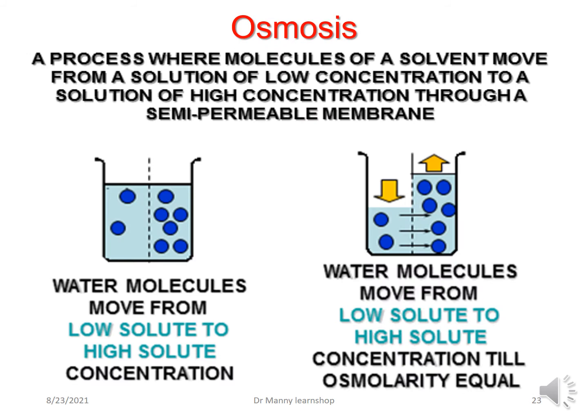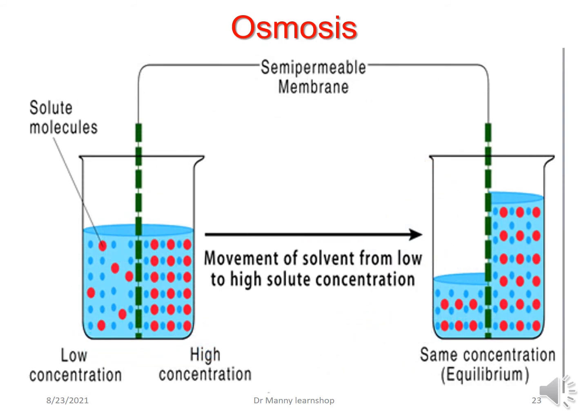Osmosis is another mechanism. It's a process where molecules of a solvent move from a solution of low concentration to a solution of high concentration through a semipermeable membrane. So water molecules move from an area of low solute to high solute concentration until the osmolarity is equal. The solutes can't move — it's the solvent that has to move. It continues until equilibration is essentially the same. Osmosis is the movement of solvent from a low to a high solute concentration.